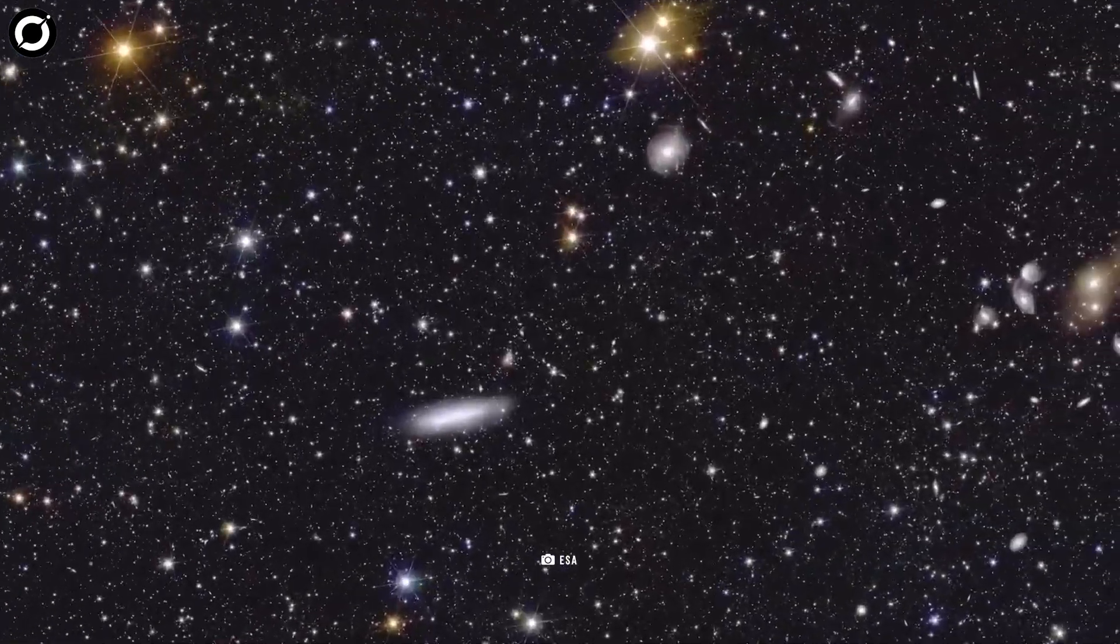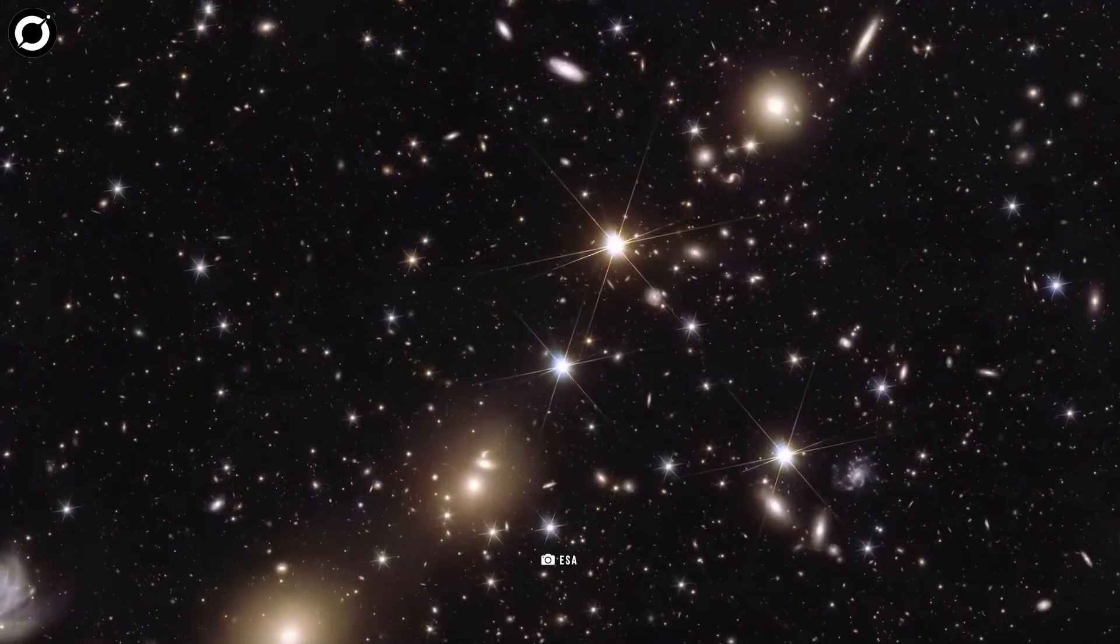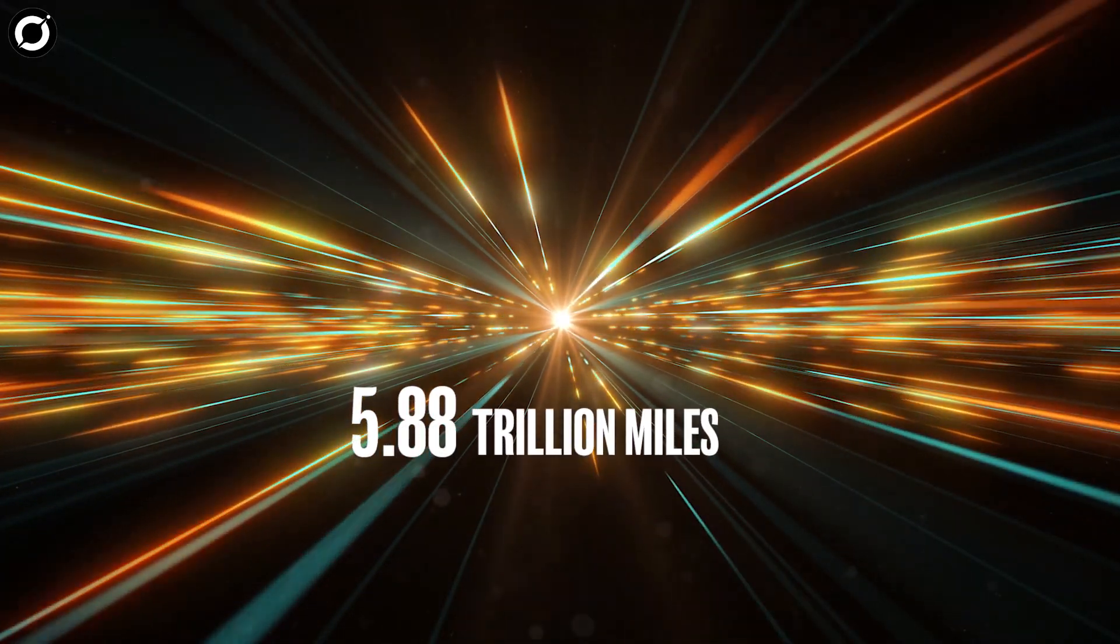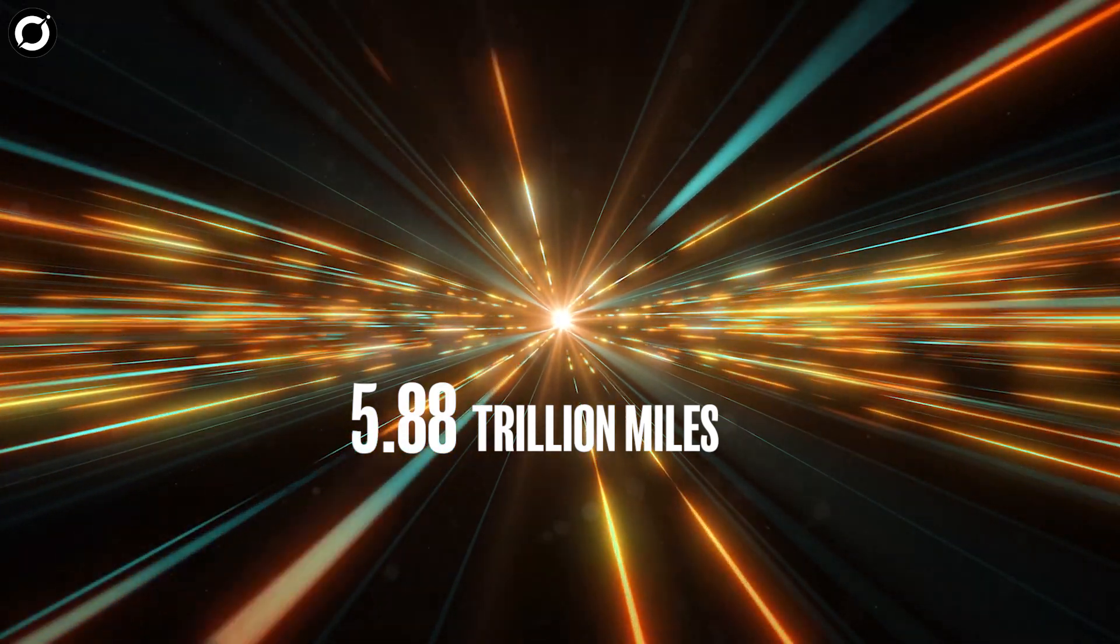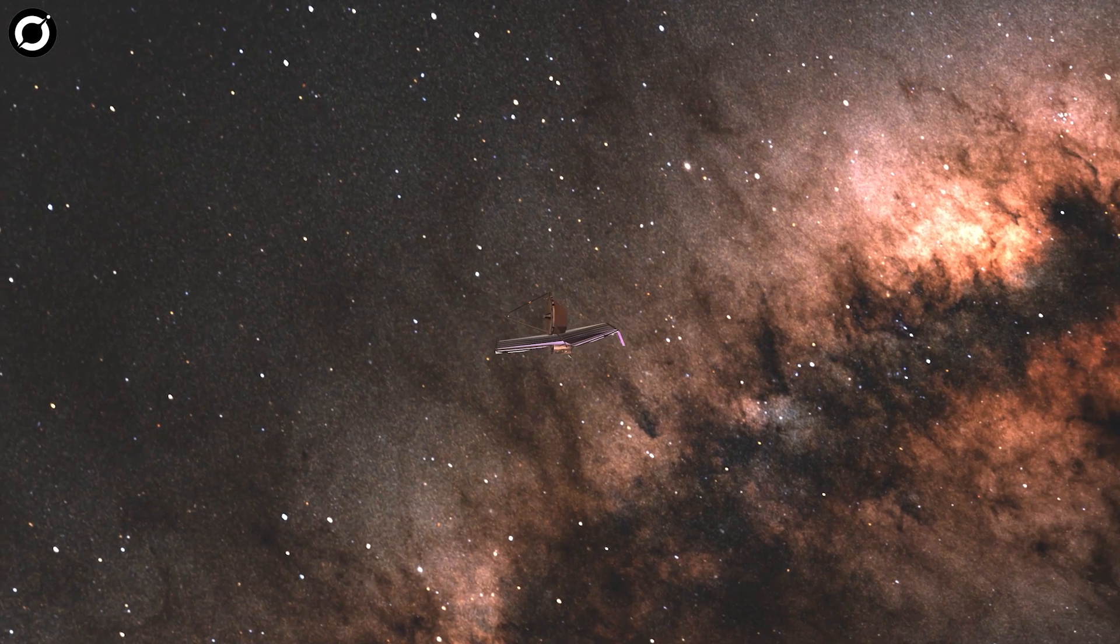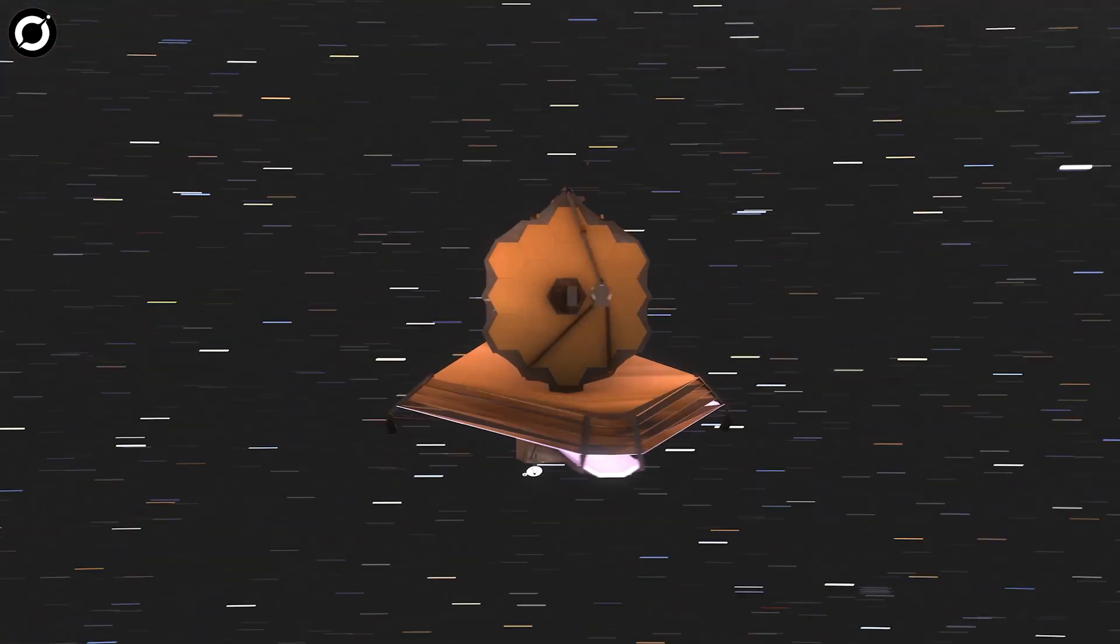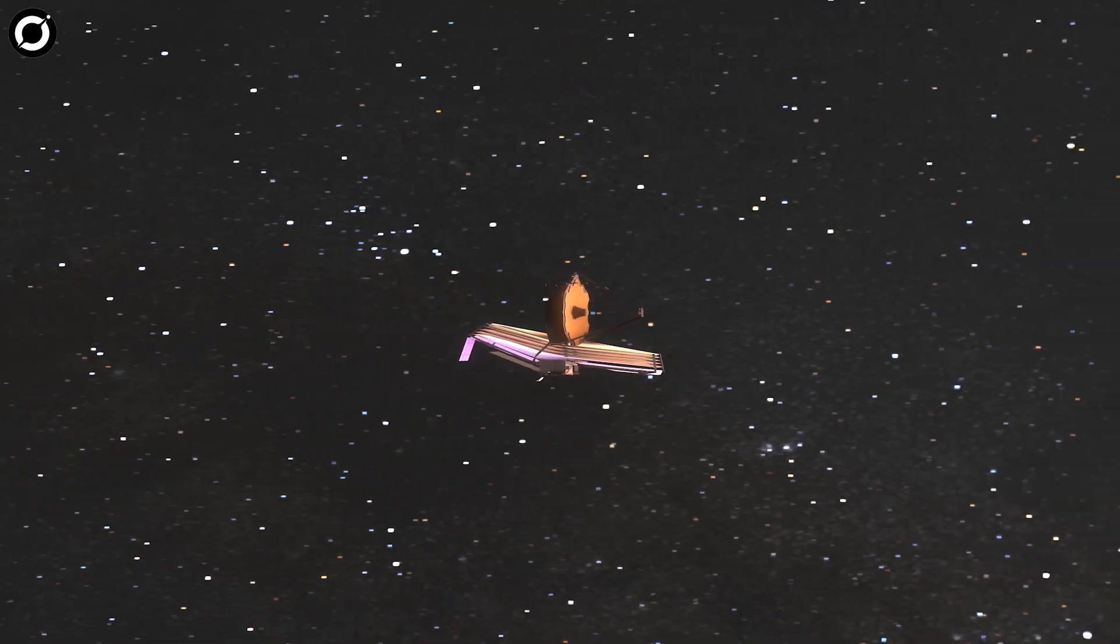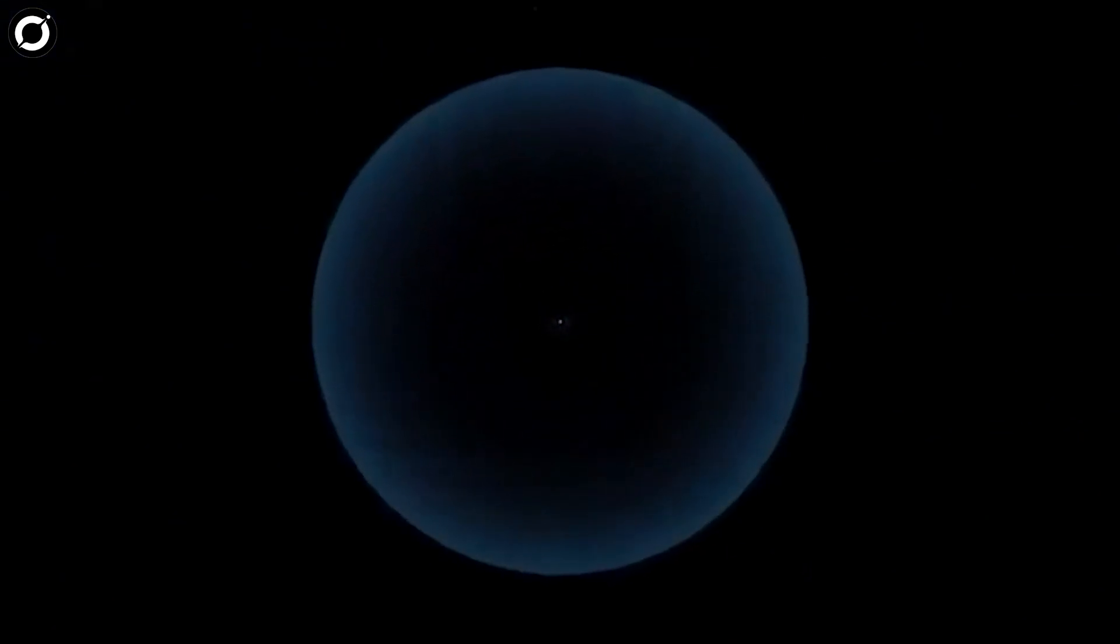If we think about the observable universe, it stretches out to about 93 billion light-years across. A light-year is the distance that light travels in one year, about 5.88 trillion miles. This means that the observable universe is a massive space. However, the universe is likely much bigger than what we can see. The 93 billion light-years figure refers to the distance we can observe from Earth, but that doesn't mean the universe ends there.